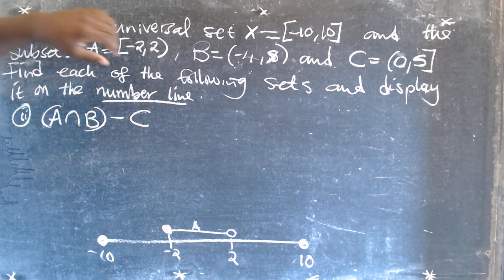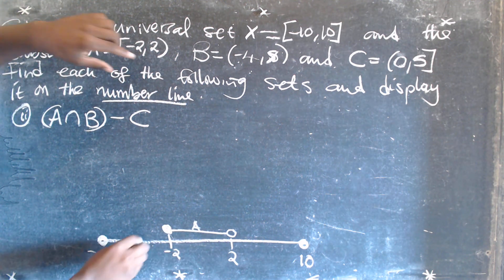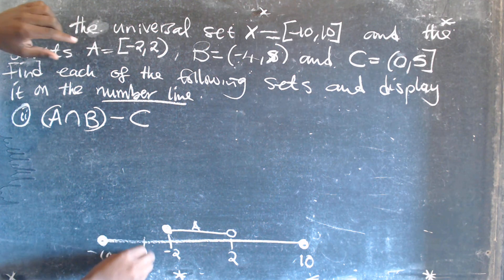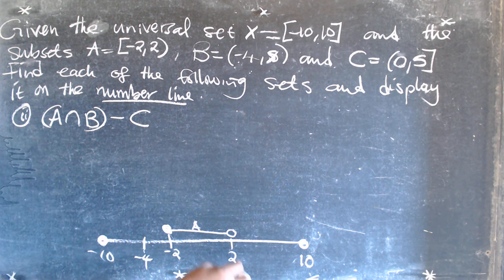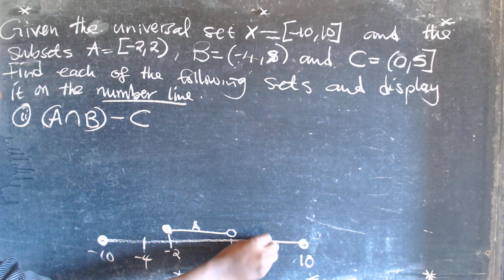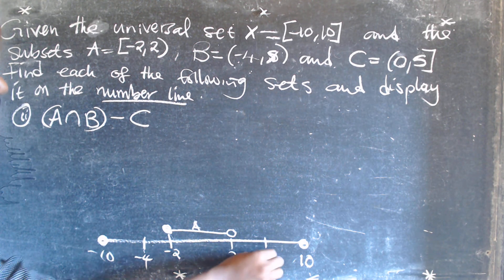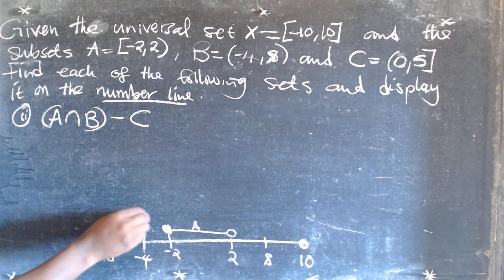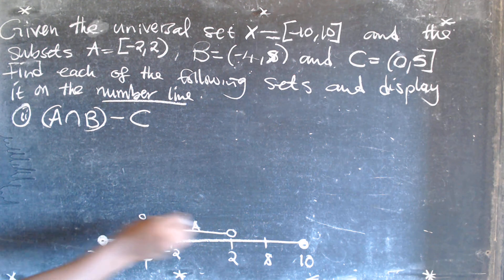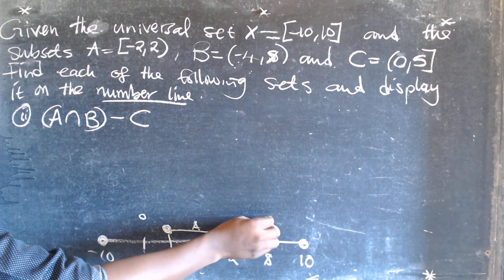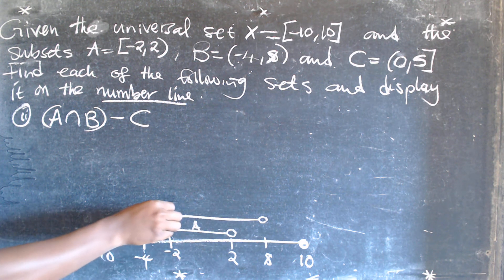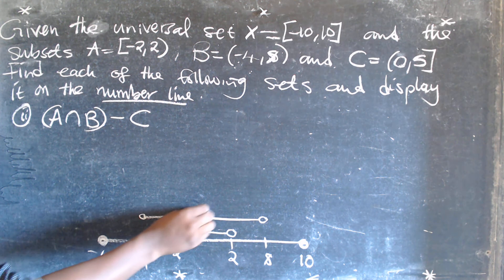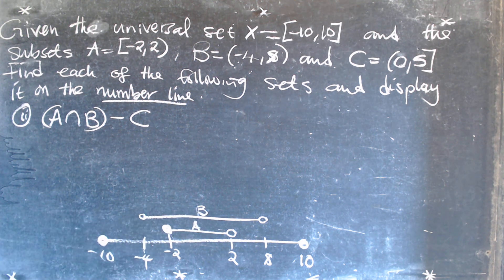Set B goes from negative 4 to 8. Negative 4 is somewhere here and 8 is somewhere there. In this case both numbers are not part of the set, so you open both ends — open on negative 4 and open on 8. You connect the two, and this is going to be set B.